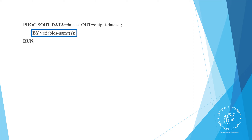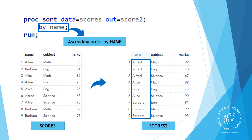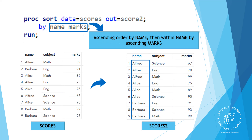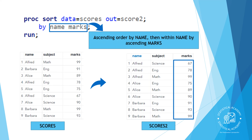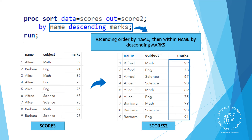The BY statement specifies one or more variables whose values are used to sort the observations, and also indicates whether to sort in ascending or descending order. By default, SAS sorts data in ascending order. If you want to sort a variable in descending order, you must specify the DESCENDING keyword immediately before each variable you want to sort descending. The variables listed on the BY statement are sometimes called BY variables. PROC SORT doesn't generate printed output, so you have to open or print the sorted data set to examine it.